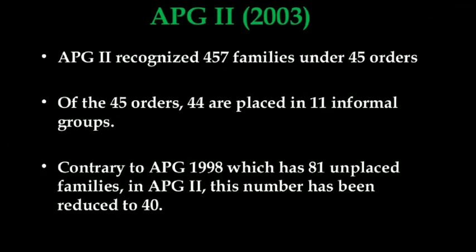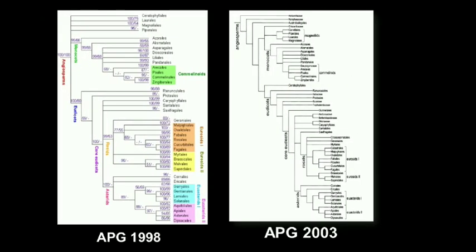After a few years, APG 2 in 2003 recognized 457 families under 45 orders. Of the 45 orders, 44 are placed in 11 informal groups. Contrary to APG 1998 which had 81 unplaced families, in APG 2 this number was reduced to 40 — meaning about 41 unplaced families were placed into their respective orders and higher categories.